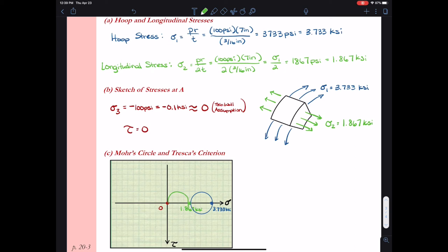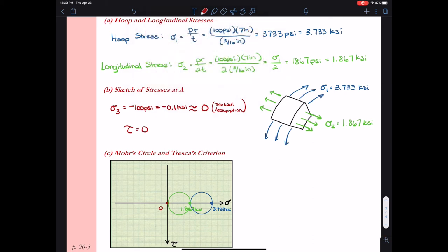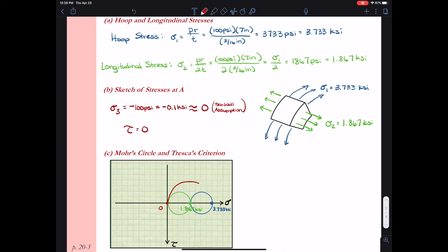So I'll go ahead and sketch my circles in place. You can do this as neatly as you can. I'm going to take advantage of my electronic program to make some nice circles here. But we need to connect the circle from sigma 1 and sigma 2, draw a circle between sigma 2 and sigma 3, and then we also need to draw in a Mohr circle that connects sigma 1 and sigma 3. And so I have that here drawn in red.